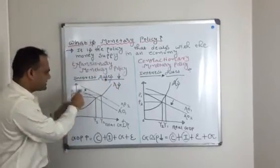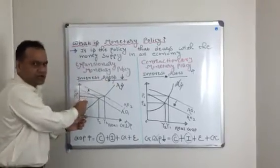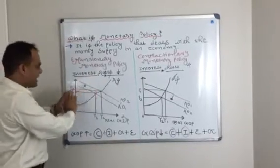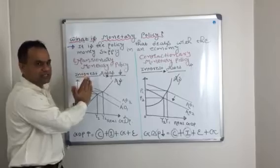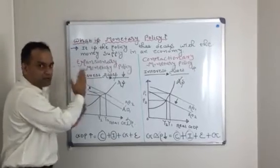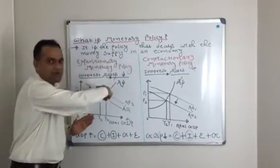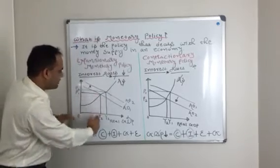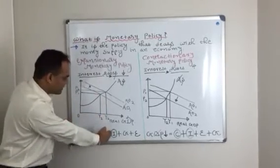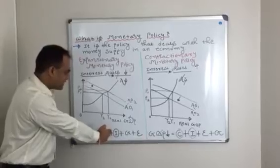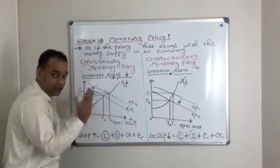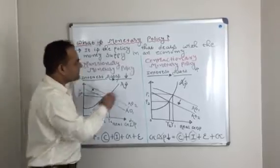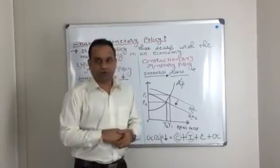This is the same diagram we studied in expansionary fiscal policy — the diagram is the same. The only change is that in expansionary monetary policy, the central bank lowers the interest rates, which eventually increases consumer spending and investment in the economy, eventually increasing GDP, and thus the price level goes up as well.